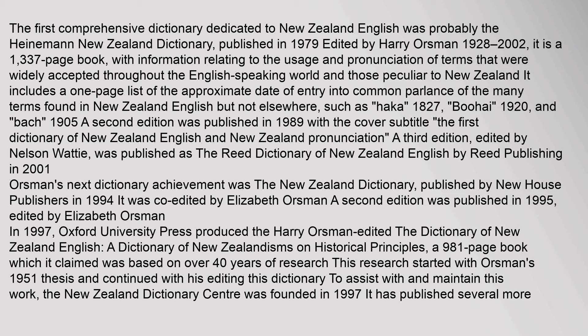The first comprehensive dictionary dedicated to New Zealand English was probably the Heinemann New Zealand Dictionary, published in 1979 and edited by Harry Orsman (1928–2002). It is a 1,337-page book with information relating to the usage and pronunciation of terms widely accepted throughout the English-speaking world and those peculiar to New Zealand. It includes a one-page list of the approximate dates of entry into common parlance of many terms found in New Zealand English but not elsewhere, such as Haka and Boahai.